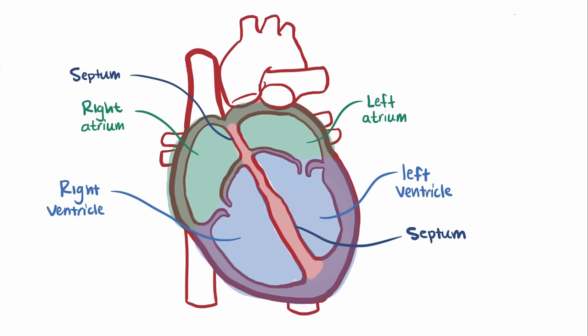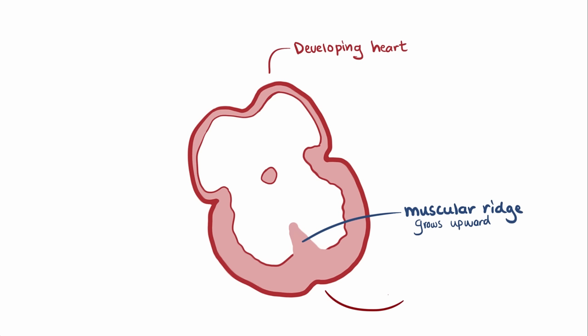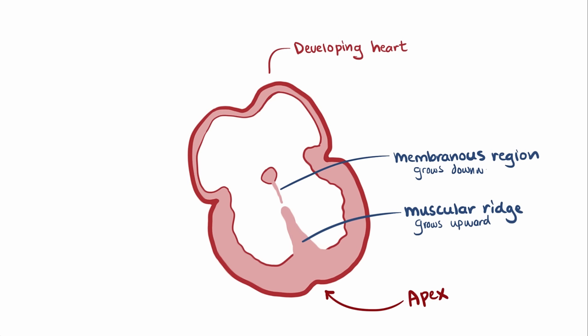A ventricular septal defect is when this lower wall, the ventricular septum, has a gap in it after development. The septums form during development as this muscular ridge of tissue grows upward from the apex, or the tip, and then fuses with a thinner membranous region coming down from the endocardial cushions — voila, two separate chambers.